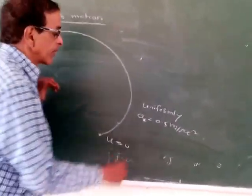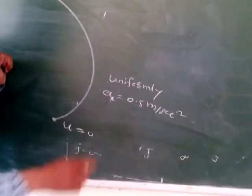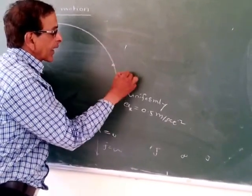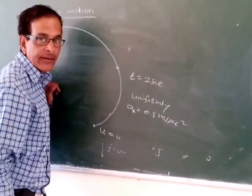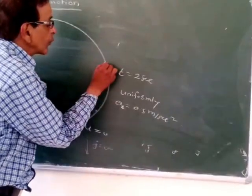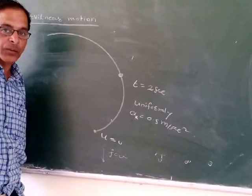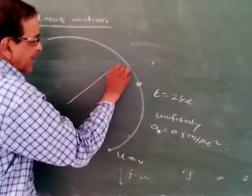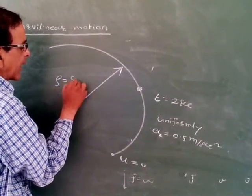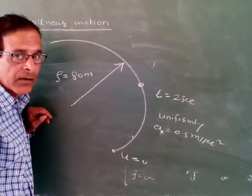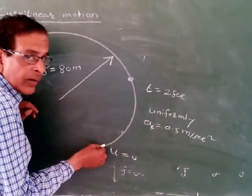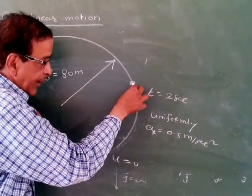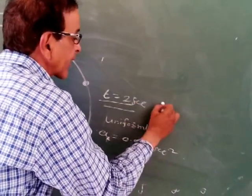Since the acceleration along the curve path is constant, we can use Newton's equation of motion. After a time t equals 2 seconds, we are interested in finding the total acceleration of the particle. The radius of curvature ρ is given as 80 meters.